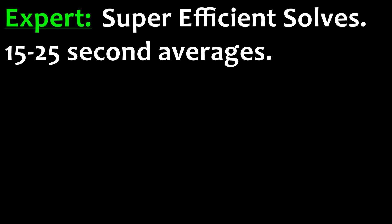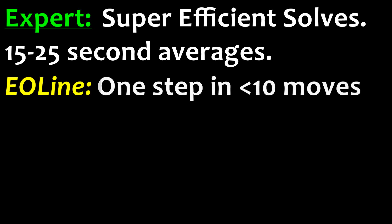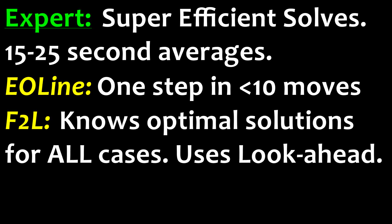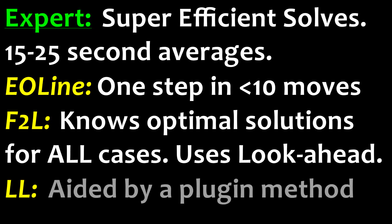To start off, experts always complete the EO line in 9 moves or less. Furthermore, experts also know multiple optimal or near-optimal solutions for all cases in the F2L stage. They use lookahead to eliminate all but the smallest pauses as they solve F2L. To finish off the solve, experts use a plugin method such as an OLL Skipper, COLL, ZZCT, or Phasing to improve their last layer.